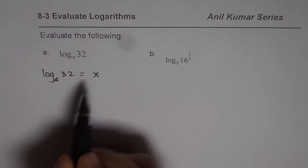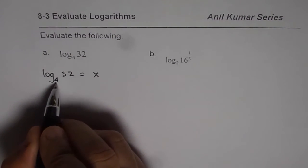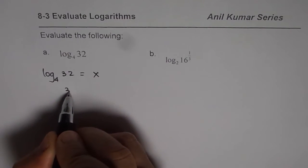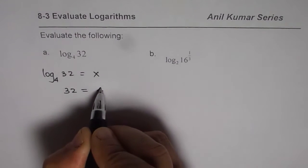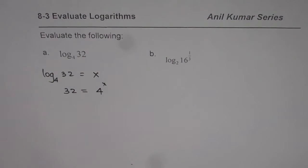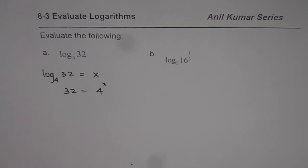Now, from the definition, convert logarithms to exponential form. That means base is 4 for us, right? Since base is 4, we say 32 should be equals to exponent to the base of 4. 4 to the power of x equals to 32. That is the equation which we need to solve.